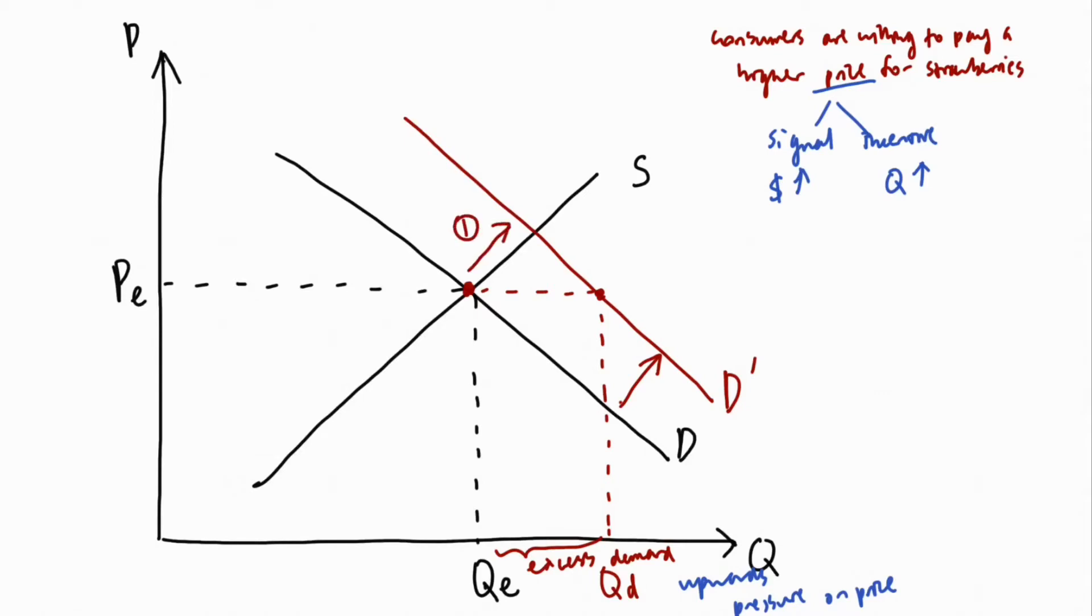This is shown by a rightwards movement along the supply curve where the producers are willing to produce a higher quantity to sell at a higher price.